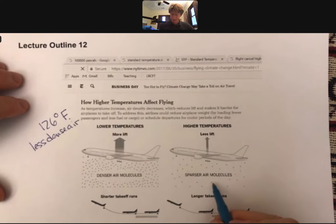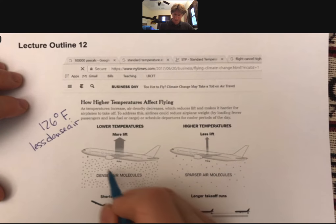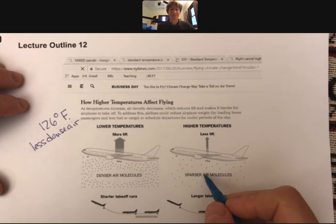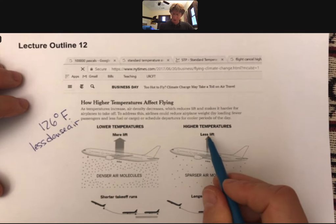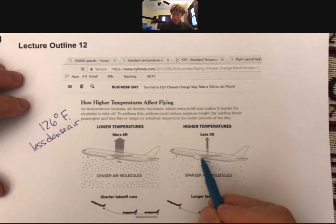Less dense air, also drawn here as sparser air molecules, right, same volume, less particles, less mass is going to be lower density. And that is going to allow the plane to create less lift as the wing cuts through these smaller number of air particles.